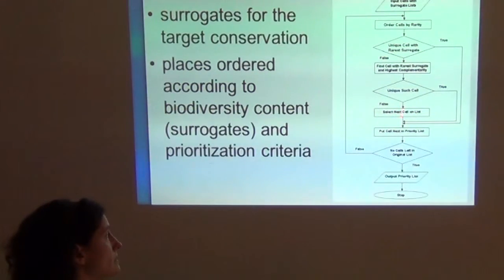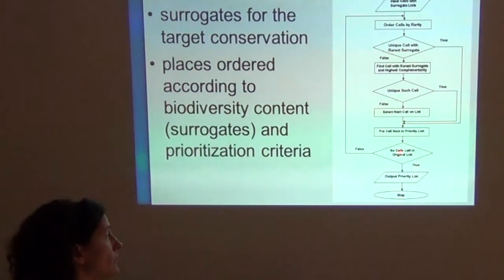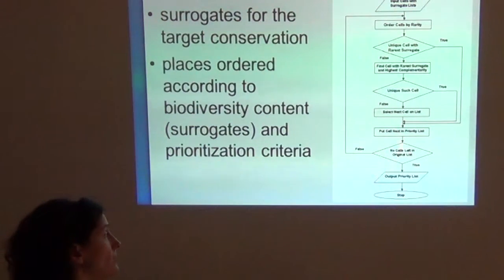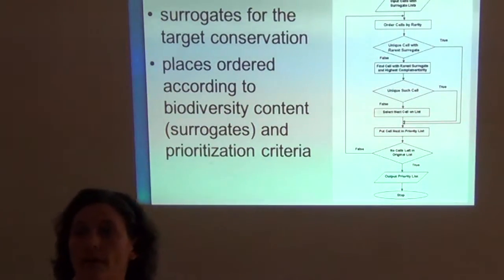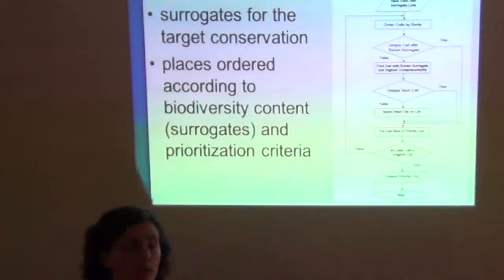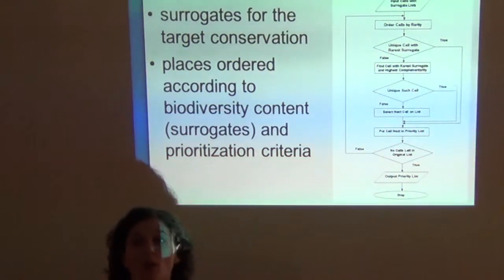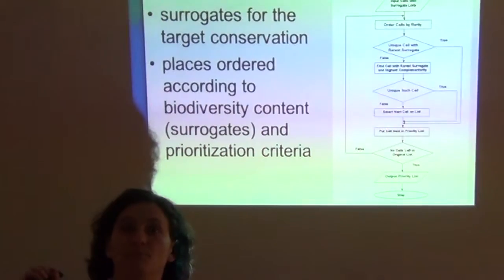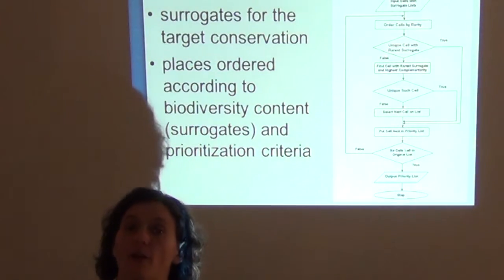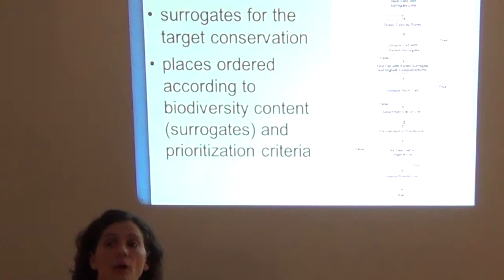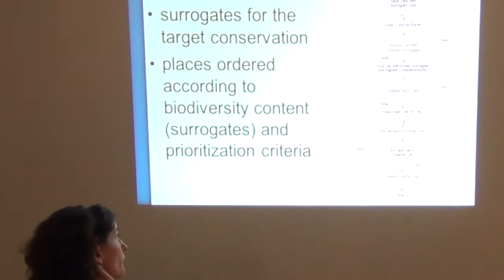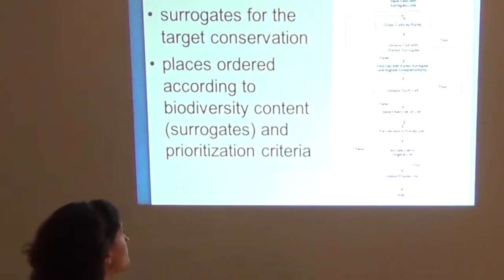If not, we select the next cell on the list and put it on the priority list. If no cells were left in the original list, we go back to the start. If we are done analyzing all cells, we get the output from ResNet. This is a simple schematic view of what ResNet does thinking of just one criterion — but we have multiple criteria, which is why we need a computer algorithm to combine different criteria in this prioritization analysis.